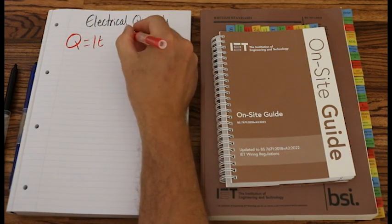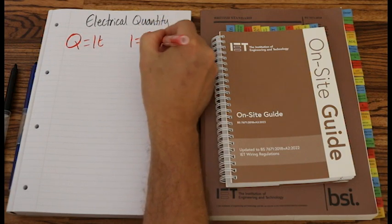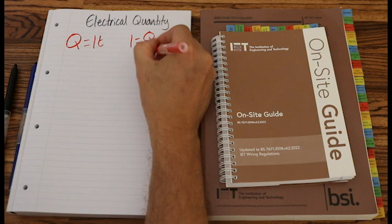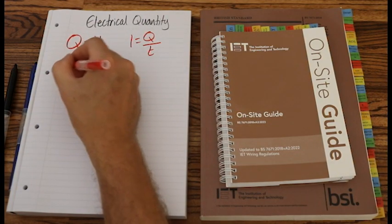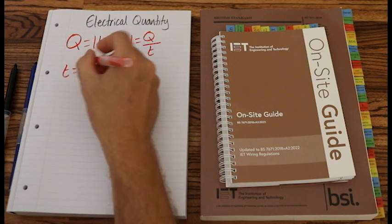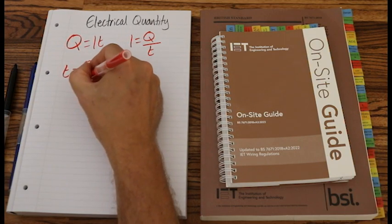And then we can transpose that to I equals Q over T. And finally, T, make sure it's a lowercase T, is capital Q over I.